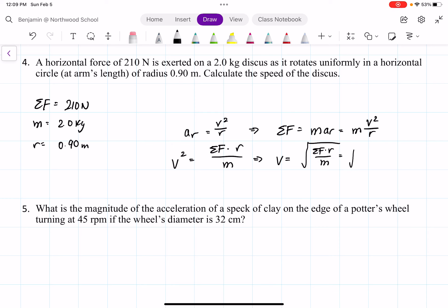If we just plug in, we have the square root of 210 times 0.9 divided by 2. And we get a velocity of 9.72 meters per second.